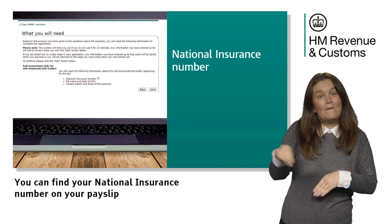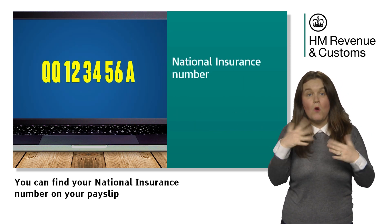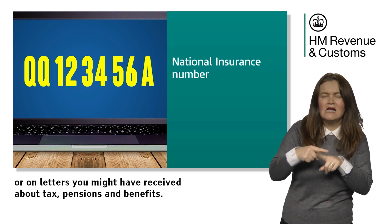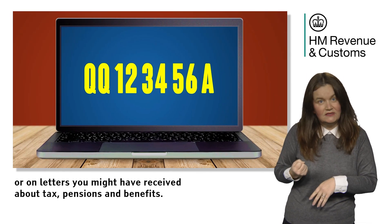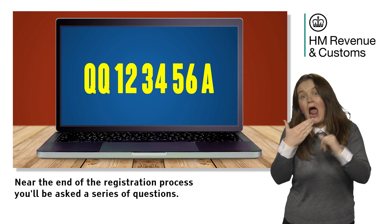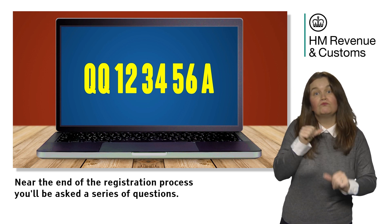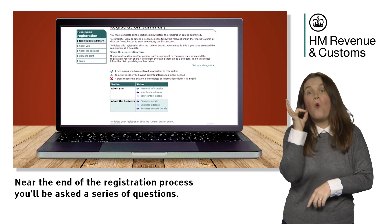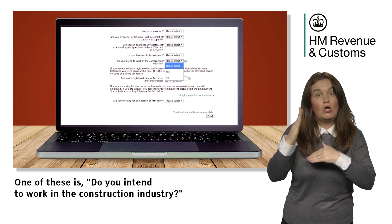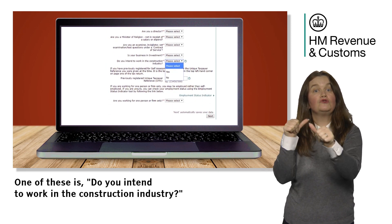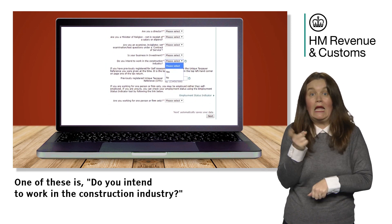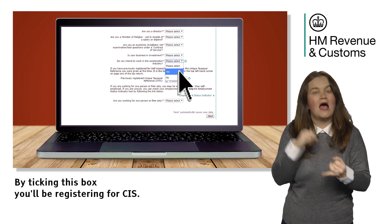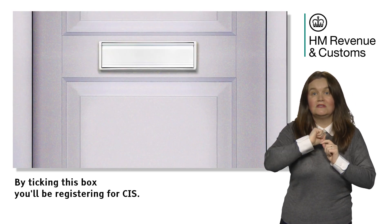You can find your national insurance number on your payslip or on letters you might have received about tax, pensions and benefits. Near the end of the registration process, you'll be asked a series of questions. One of these is: do you intend to work in the construction industry? By ticking this box, you'll be registering for CIS.